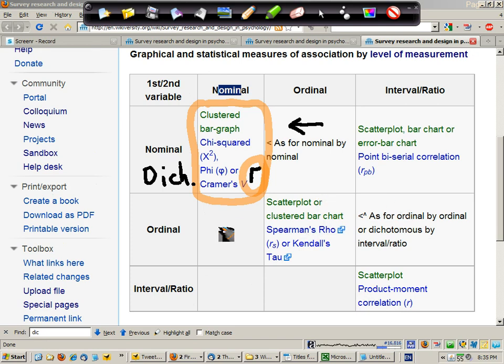And if we have ordinal-by-interval ratio data, there's nothing special, so we either recode our data down to dichotomous by interval ratio and use this approach, or we treat the data as ordinal-by-ordinal.